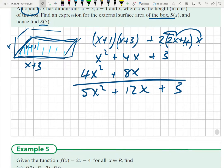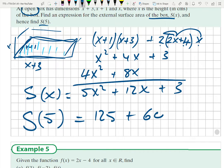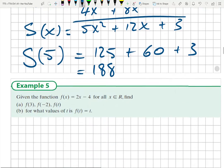Now S(5) will be 125 plus 60 plus 3 by subbing in. 185 and 3 is 188. Okay.